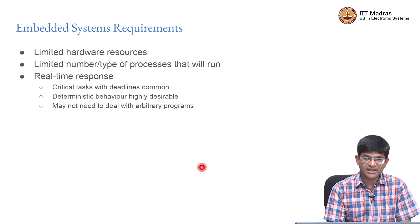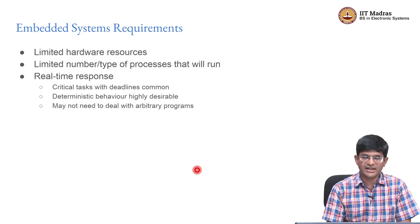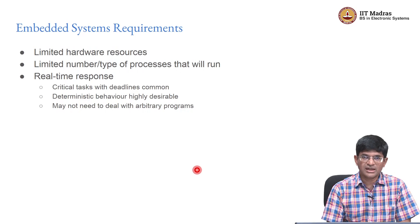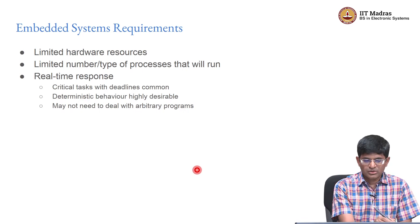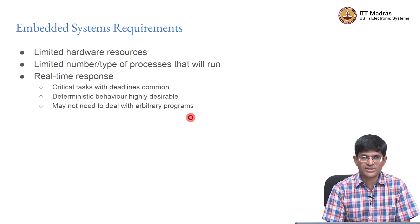There are critical tasks with deadlines that have to be met, and deterministic behavior is highly desirable — in most cases mandatory. For example, if you press a button on a TV remote control, you want the channel to switch immediately, but a delay is not catastrophic. On the other hand, when you press the brakes of a car, you expect it to respond immediately by slowing down — if it does not, it could actually be catastrophic. The flip side is that such systems may not need to deal with arbitrary programs; you can put restrictions on the type of programs allowed to run on your system.